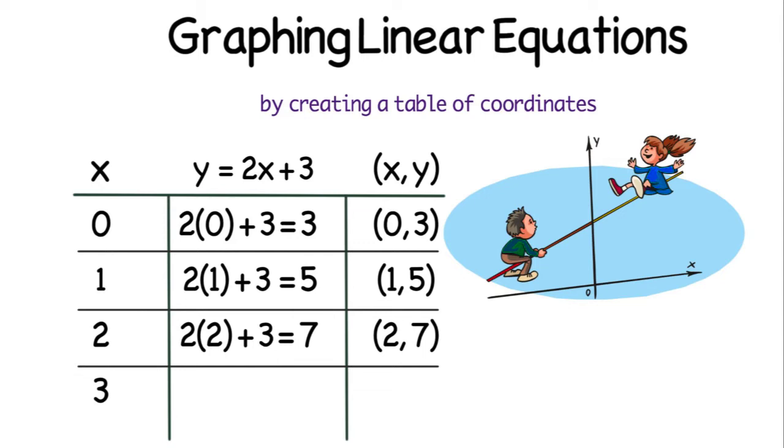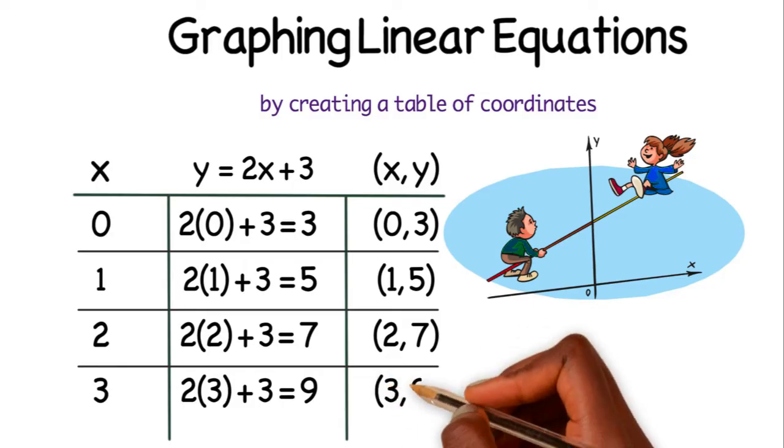The final x value that I chose was 3. So 2 times 3 is 6, 6 plus 3 is 9, so 3 comma 9 will be the fourth coordinate that I will graph.